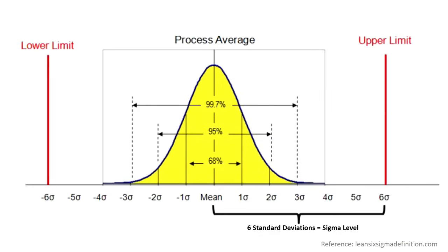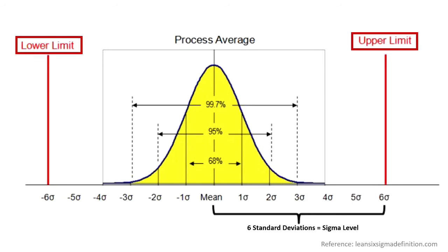Let's look at this visually from a product perspective. The yellow in this graph represents product data points — everything coming off a manufacturing line based on the data collected. How good your manufacturing process is will determine how wide or how tight your graph is. The next thing to look at are the lower and upper specification limits.